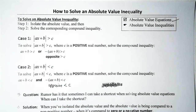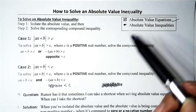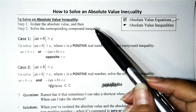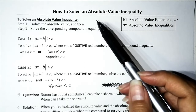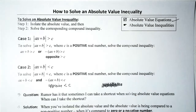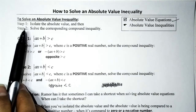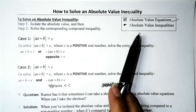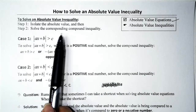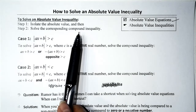The question is: how do we solve these? To solve an absolute value inequality, the initial setup strategy is the same as with equations. Step 1: isolate the absolute value. Step 2: solve the corresponding compound inequality — not equation, but compound inequality.